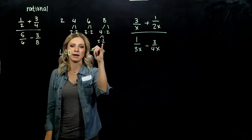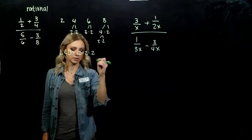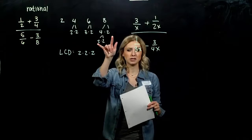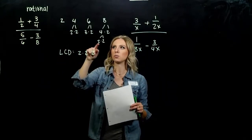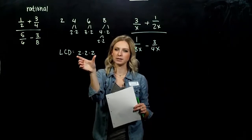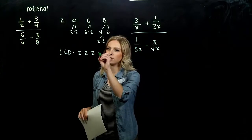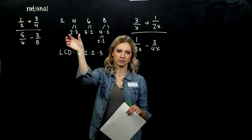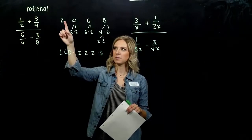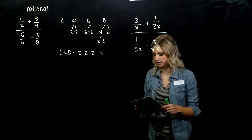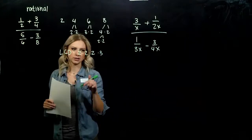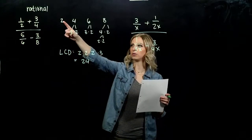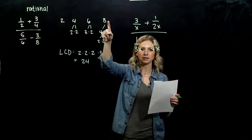Our LCD needs to be divisible by 8, so we take into account 3 factors of 2 — the prime factorization of 8. Then we compare with 6: what is our LCD missing? A factor of 3. Checking the others — 4 and 2 — we've already taken those factors of 2 into account, so nothing is missing. Multiplying 8 times 3 gives us 24. So 24 is divisible by 2, 4, 6, and 8, and it's the smallest such number.